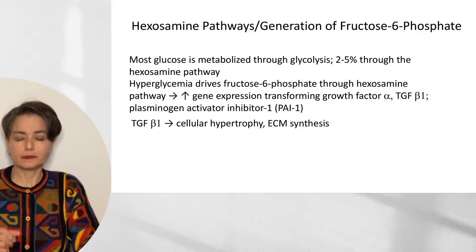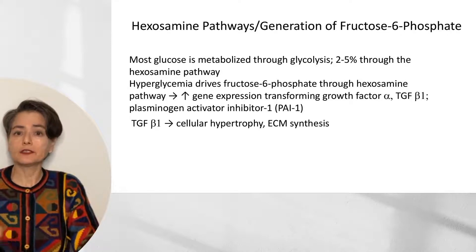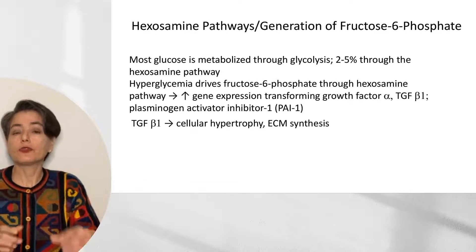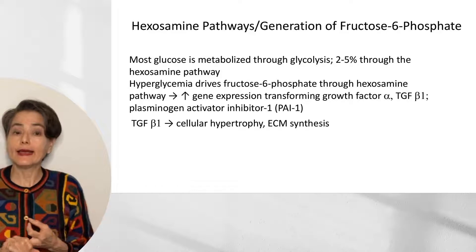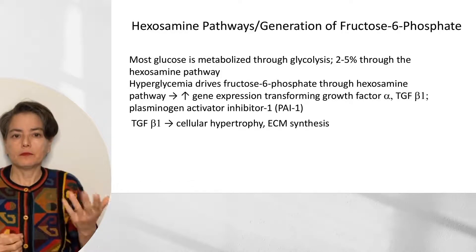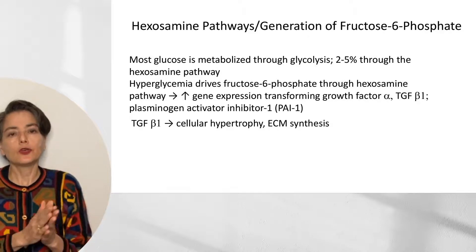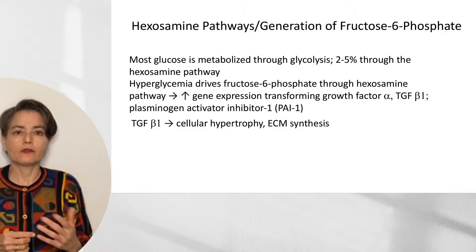The fourth mechanism is the hexosamine pathway. Most glucose is metabolized through glycolysis; a very small amount goes through the hexosamine pathway. With hyperglycemia, fructose-6-phosphate is driven through this pathway, which through a variety of mechanisms increases gene expression of TGF-alpha, TGF-beta 1, and again PAI-1. As mentioned, PAI-1 is procoagulant, and TGF-beta 1 plays a role in cellular hypertrophy and extracellular matrix synthesis. These last three pathways involve more hand-waving — they're not as well-defined as our advanced glycation end products mechanism.